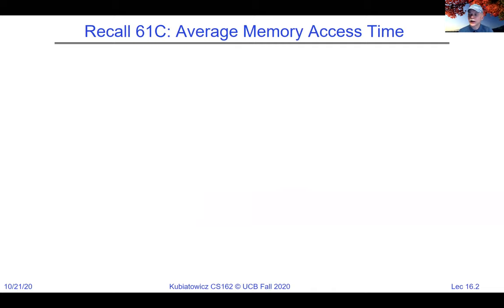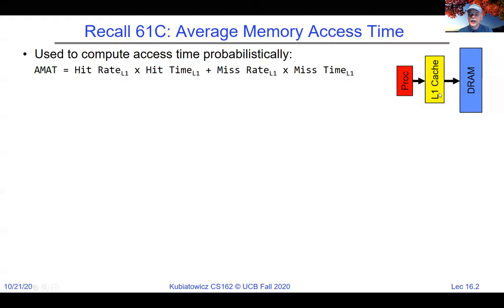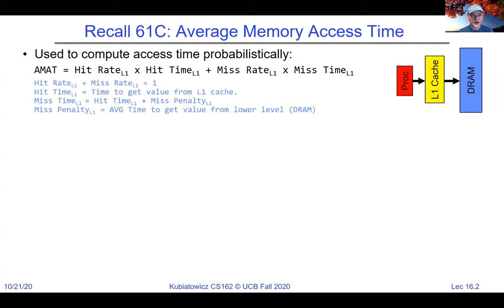This is 61C material that hopefully you'll be familiar with. The average memory access time is composed of two different hit times probabilistically. We're in a situation where we have a processor talking to an L1 cache, which is talking to DRAM. The trick is to figure out how the cache improves our performance, and to do that, we have an aggregate hit rate probability. The hit rate is the percentage of the time that we actually get a hit in the cache, and the miss rate is one minus that.